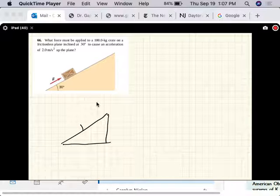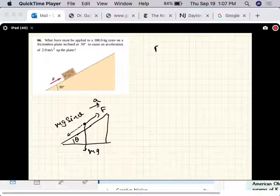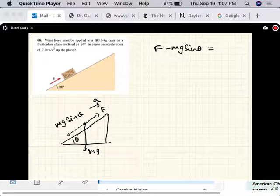You guys remember this from the lecture. Now actually what we'll do is make the box a point object, and there is the component of gravity along the incline, and here is the push, and the acceleration is a in that direction. So F minus mg sine theta equals m times a.